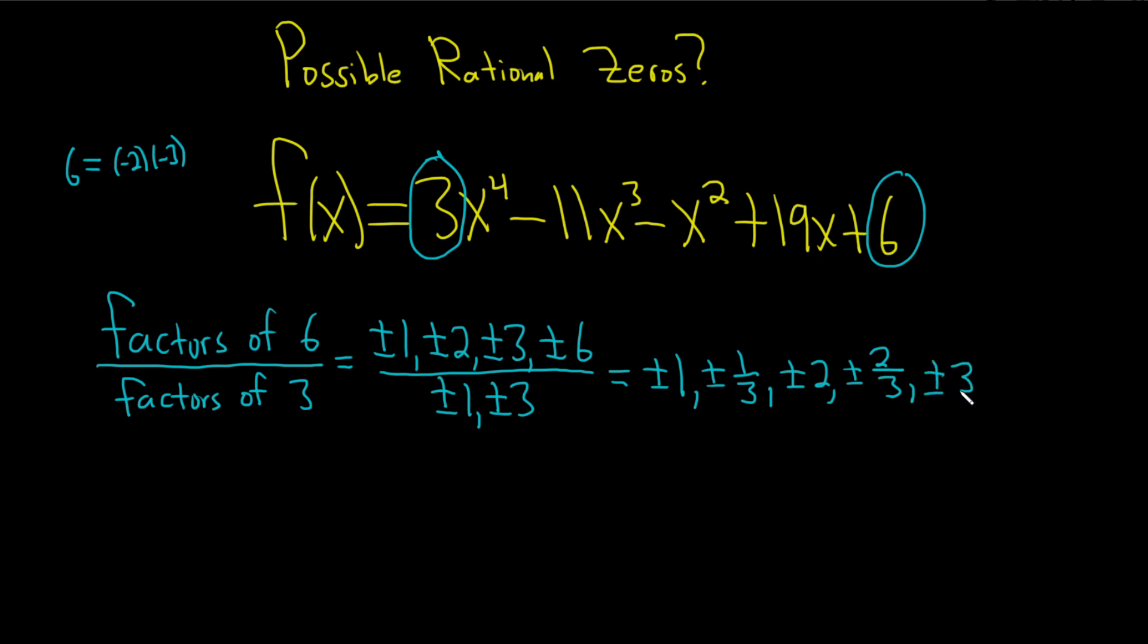And here's where it gets fun. 3 over 3 is 1, but we already have it, so you don't write it again. Then you go to 6. 6 over 1 is 6. 6 over 3 is 2, but we already have it, so we don't write it again.